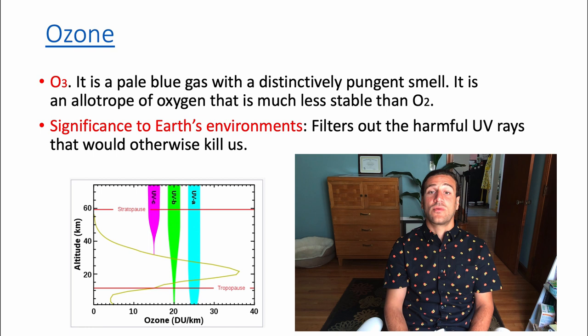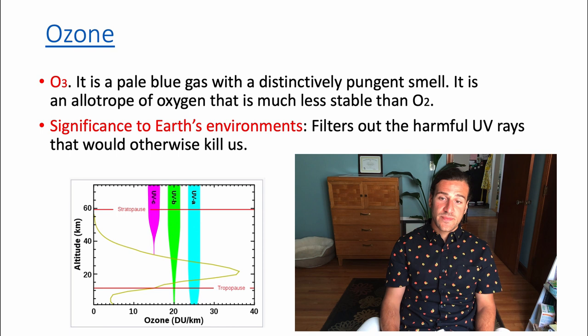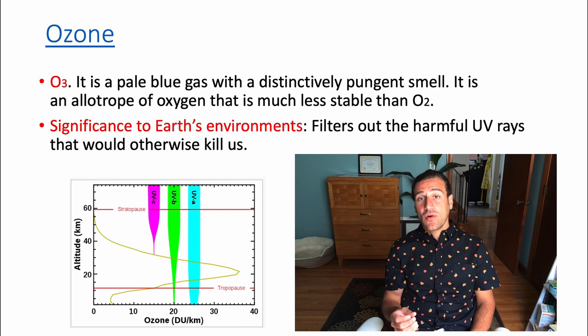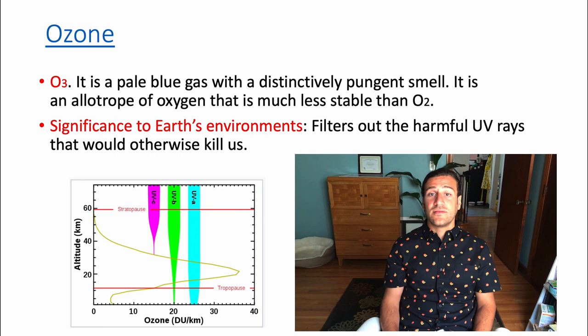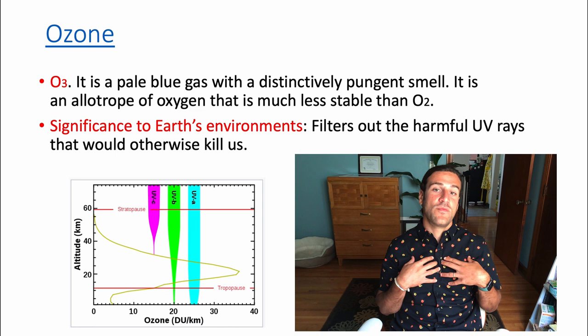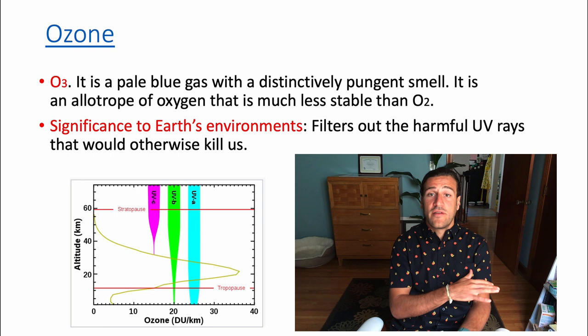Some UV radiation still reaches Earth's surface, which is why it's important to wear sunscreen. This is not only harmful to us but to other organisms too, though most other organisms are covered in fur or feathers that reflect UV radiation. With our own evolution we've lost much of our hair and fur, leaving our skin bare and vulnerable to UV radiation.